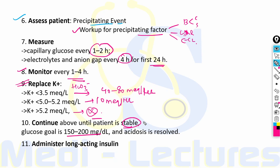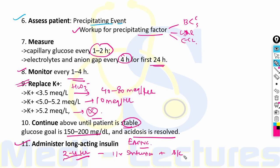Continue treatment until the patient is stable; goal is blood glucose of 150 to 200 mg/dL and resolution of acidosis. Start long-acting insulin as soon as the patient starts eating, with a 2 to 4 hour overlap — during which both IV insulin infusion and subcutaneous long-acting insulin are given simultaneously. This overlap allows dose adjustment and prevents DKA relapse, since brief periods of inadequate insulin can trigger recurrence.